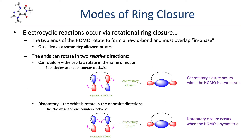At the orbital level, electrocyclizations occur via rotation at the ends of the HOMO of the pi system. The two ends must combine in-phase in order to create a new bonding interaction. This in-phase overlap is called a symmetry-allowed process.